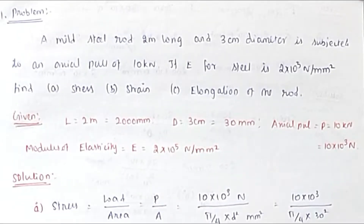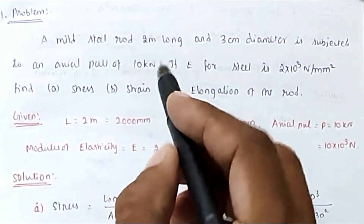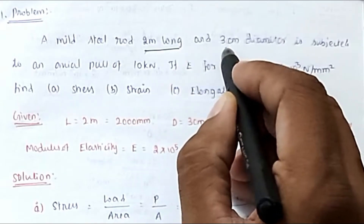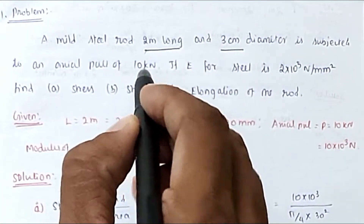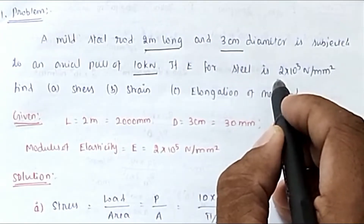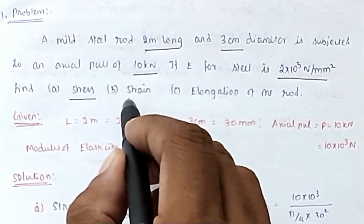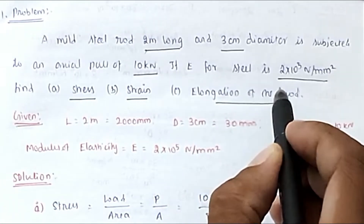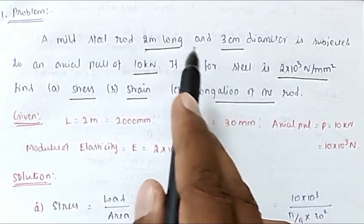Hello friends, welcome to Silo Engineering Exam. Today we are going to see a problem related to mechanics of solids. The problem is: a mild steel rod 2 meters long and 3 centimeter diameter is subjected to an axial pull of 10 kilonewton. If E for steel is 2×10⁵ N/mm², find the stress, strain, and elongation of the rod.